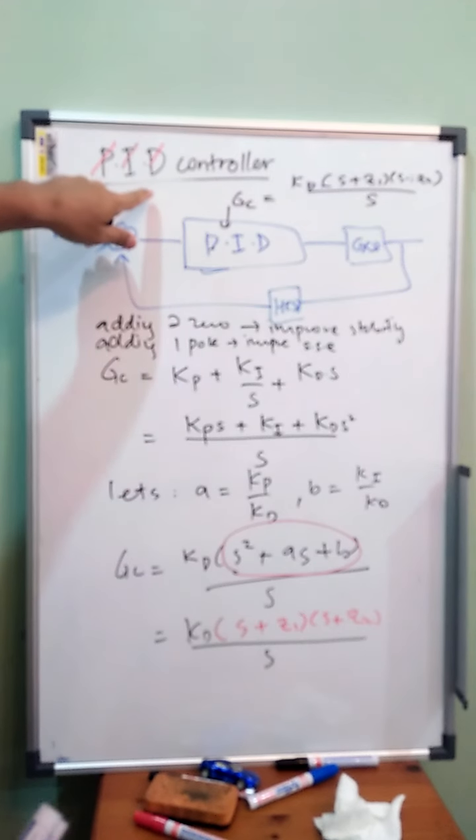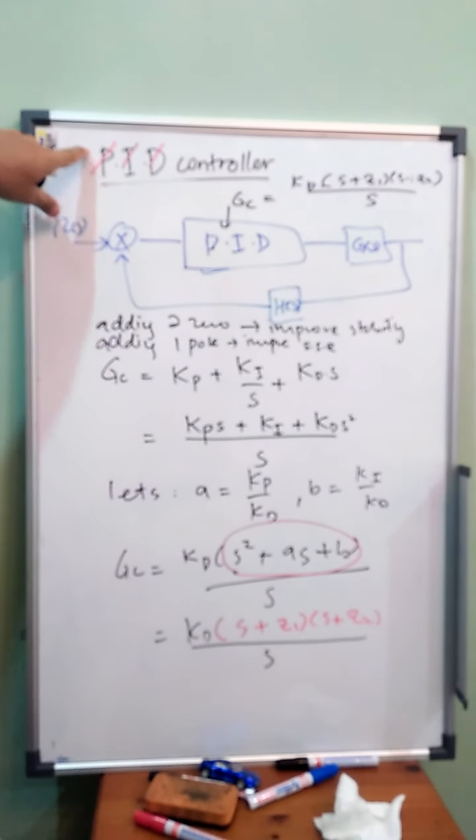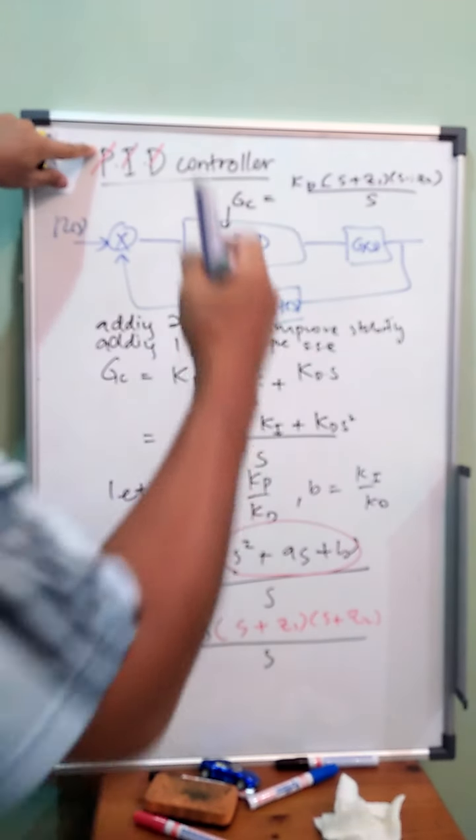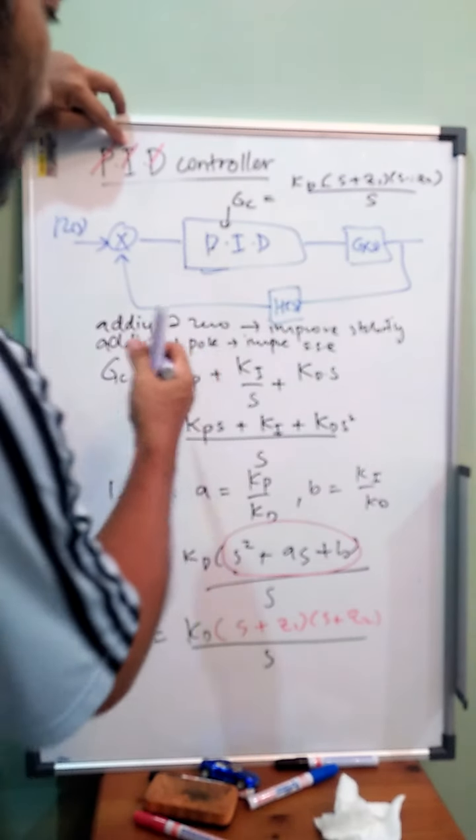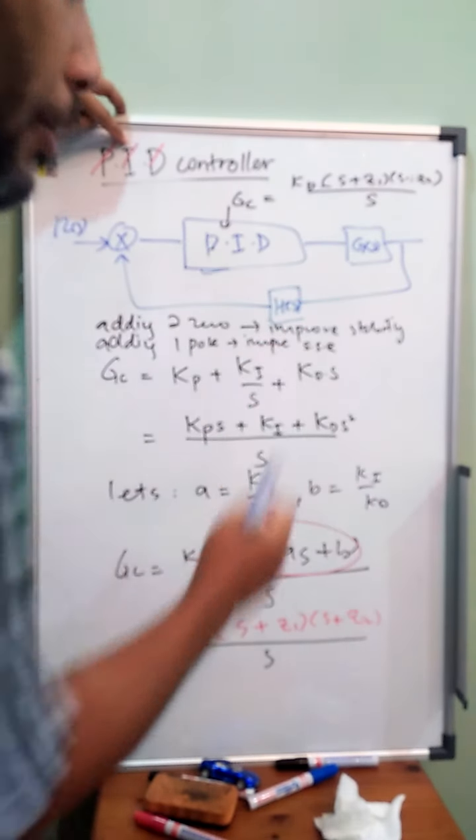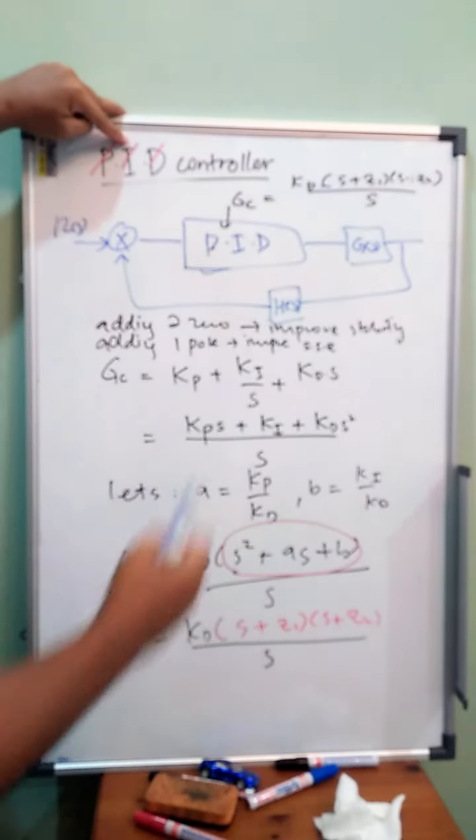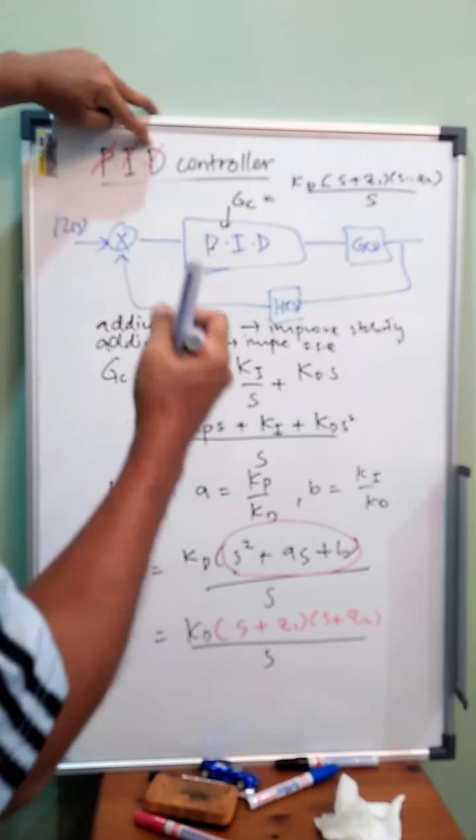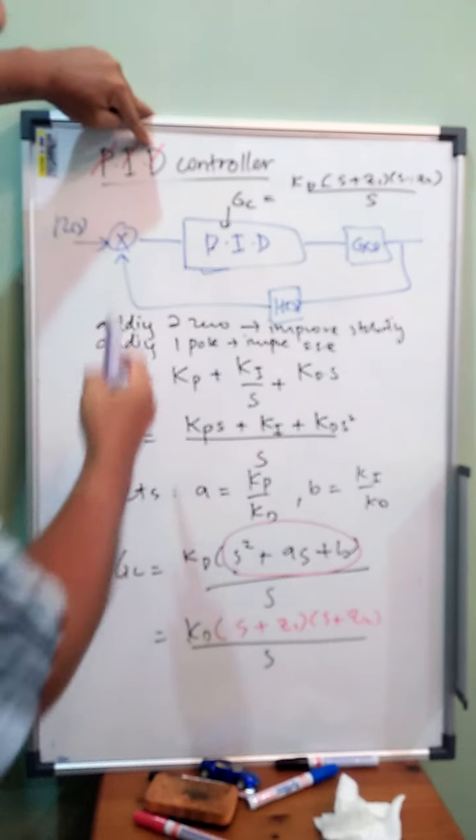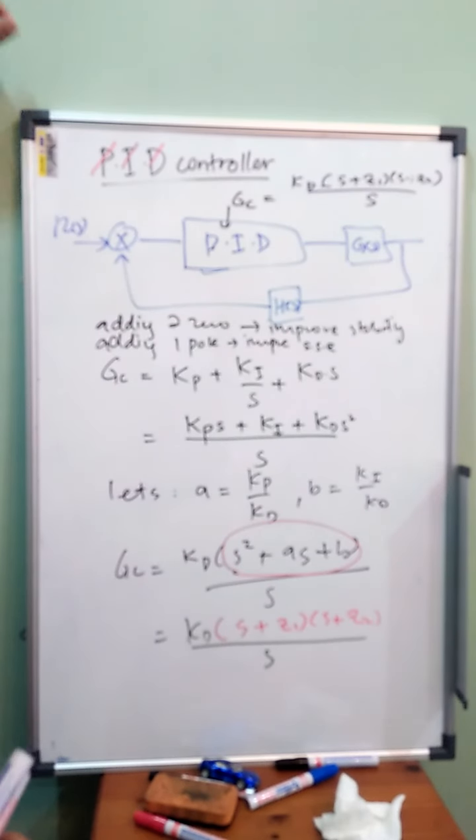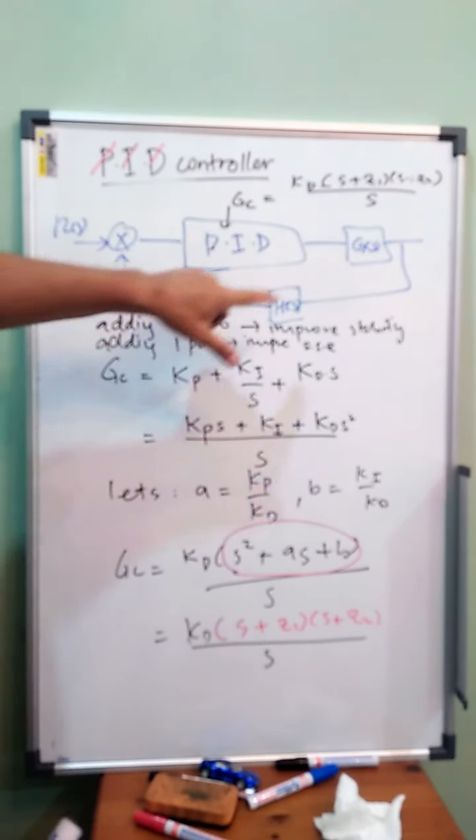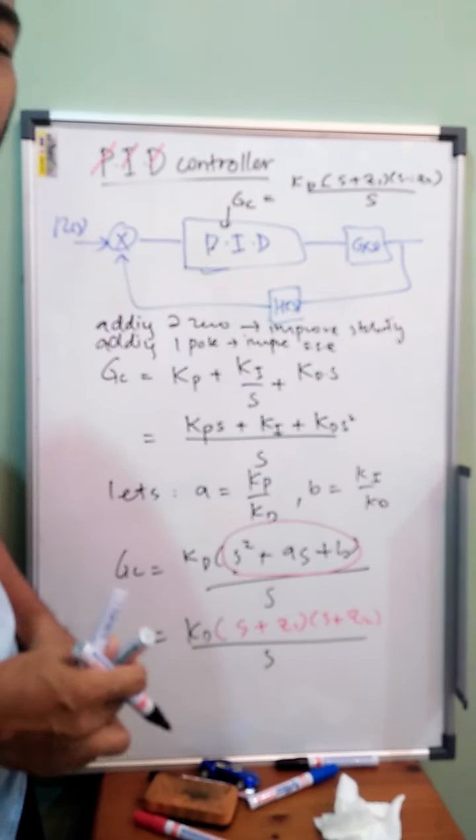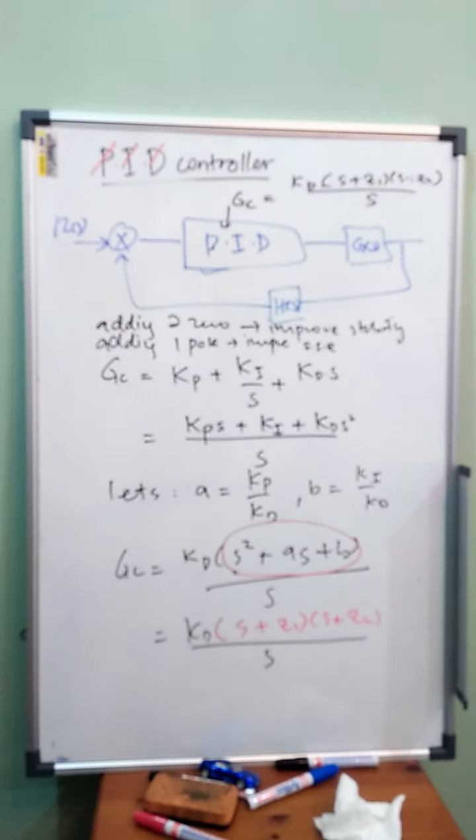PID control system uses the advantage of P, we know that proportional gives fast response. The advantage of integral is reducing steady state error. So PID control system, we have all the improvement from PID. That's all, thank you.